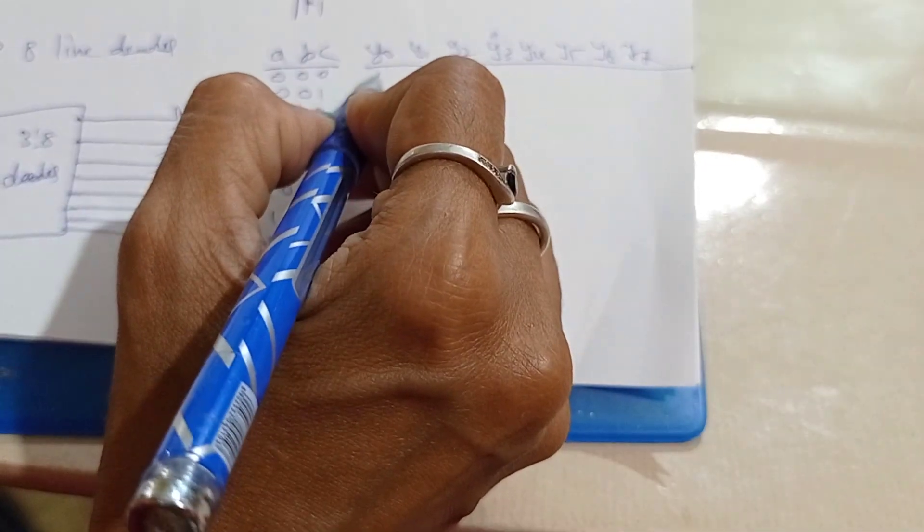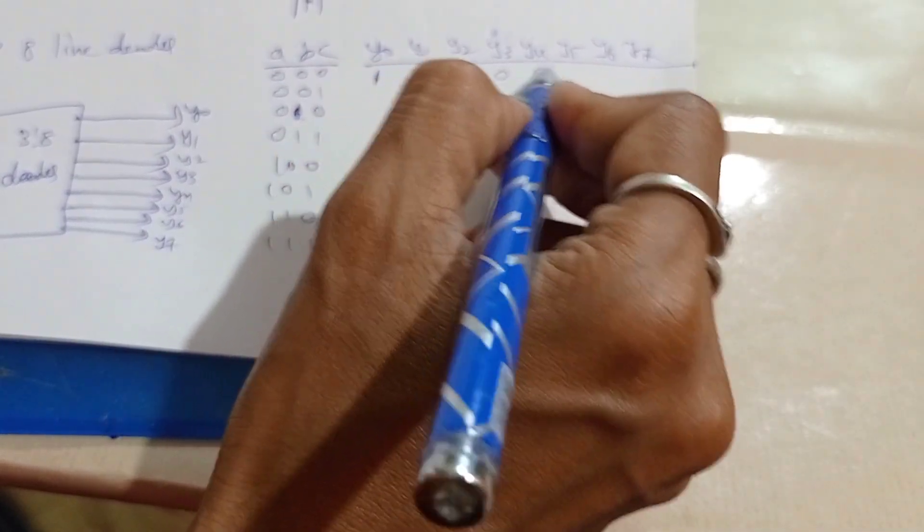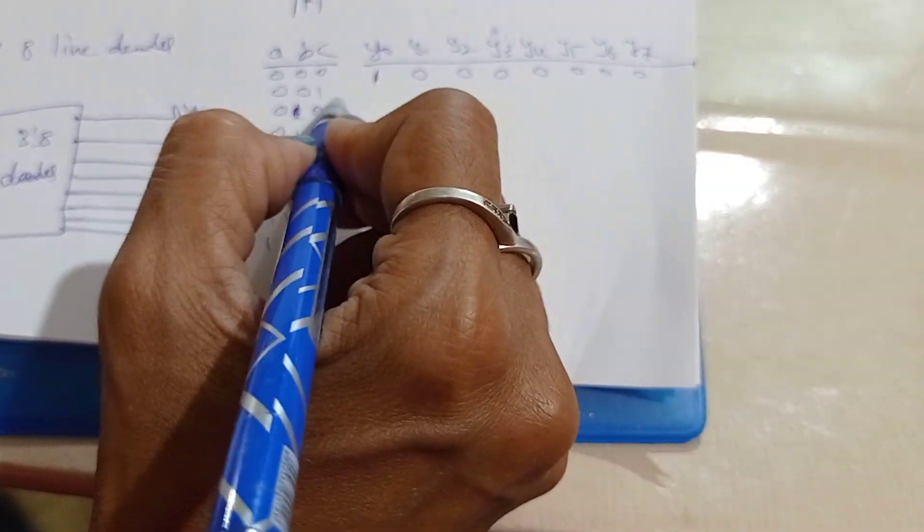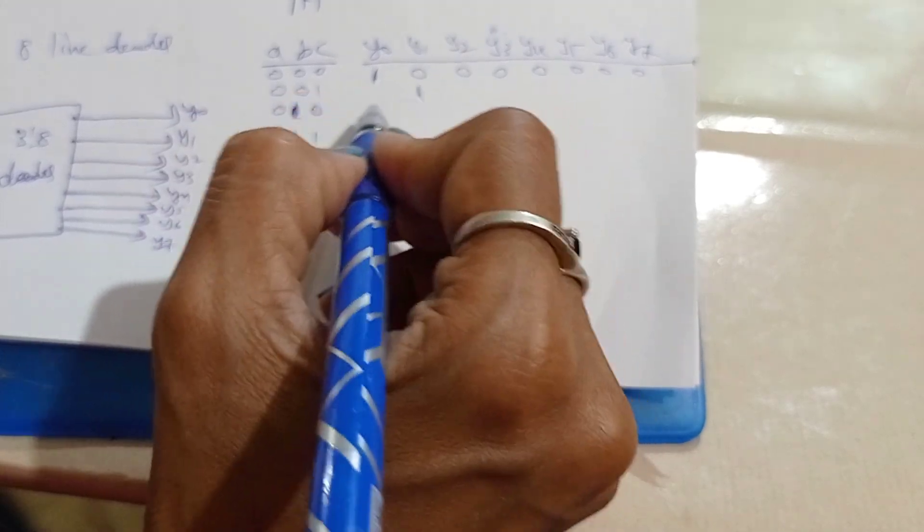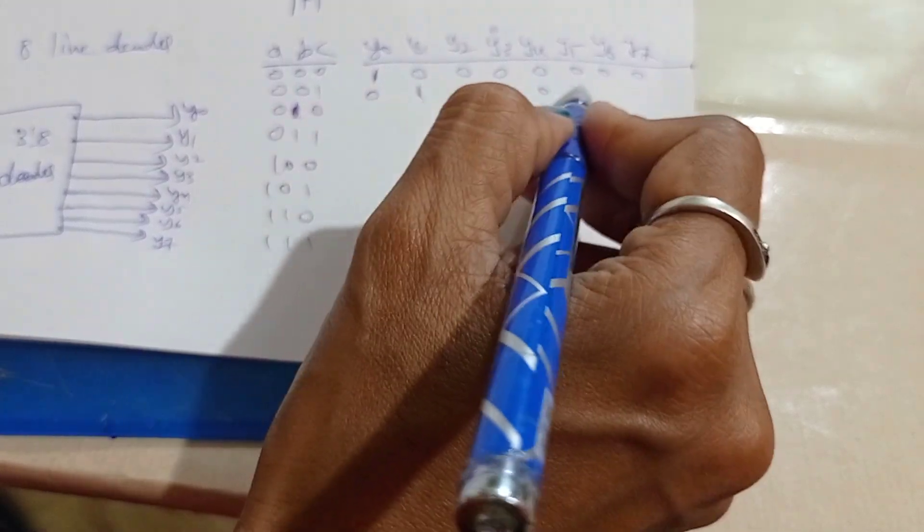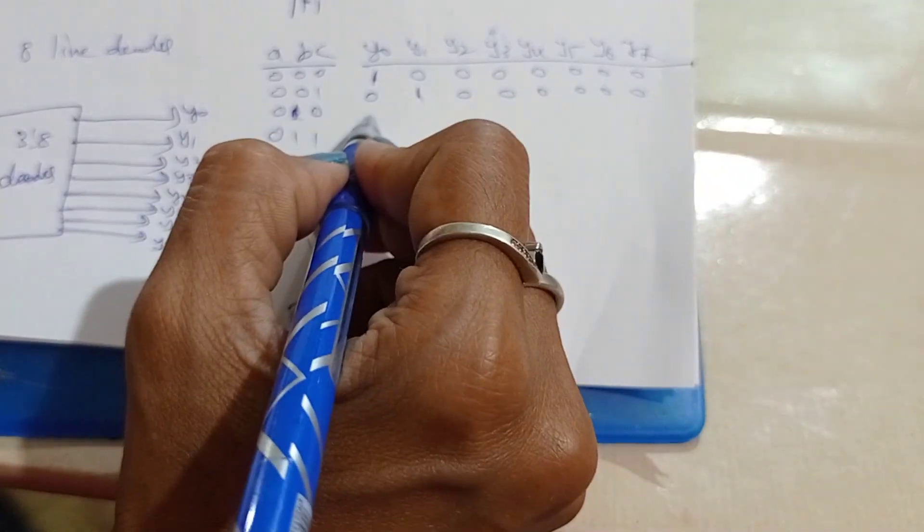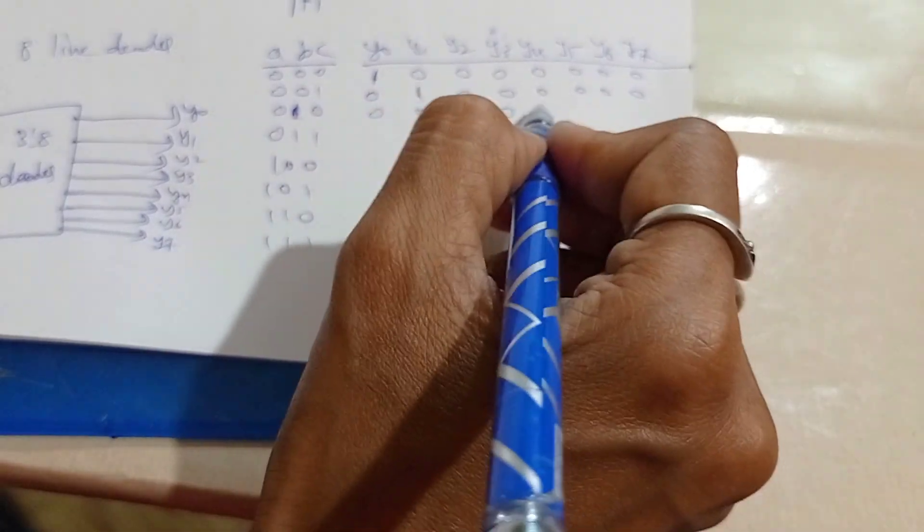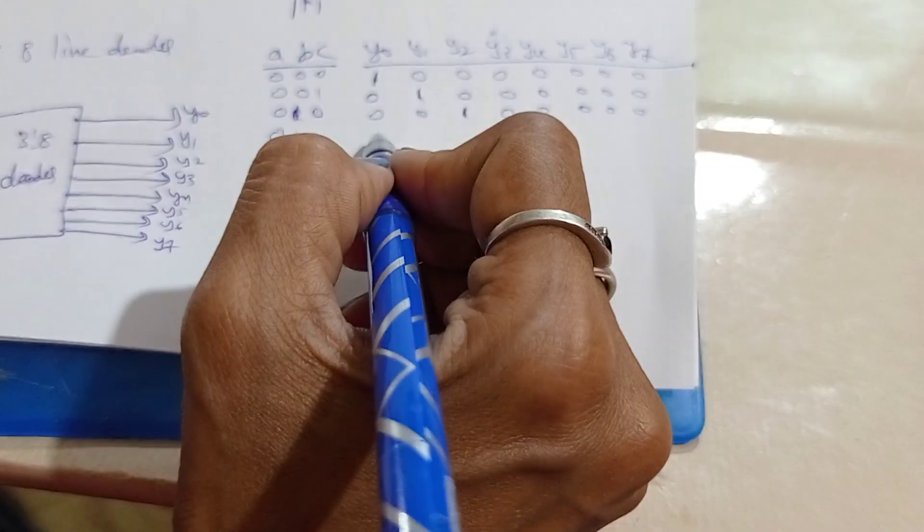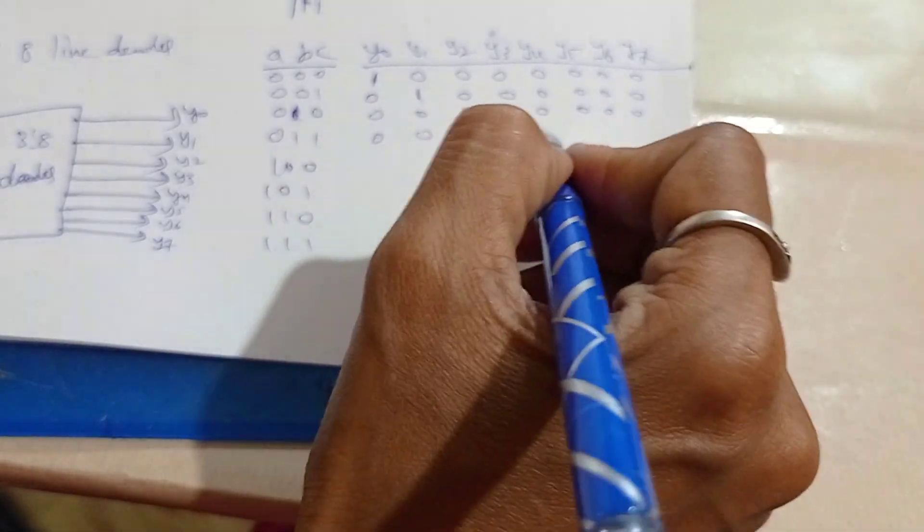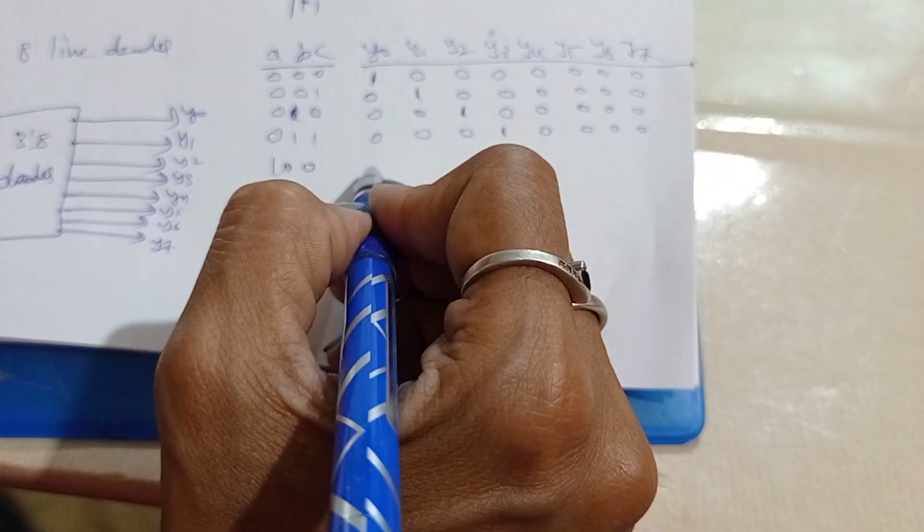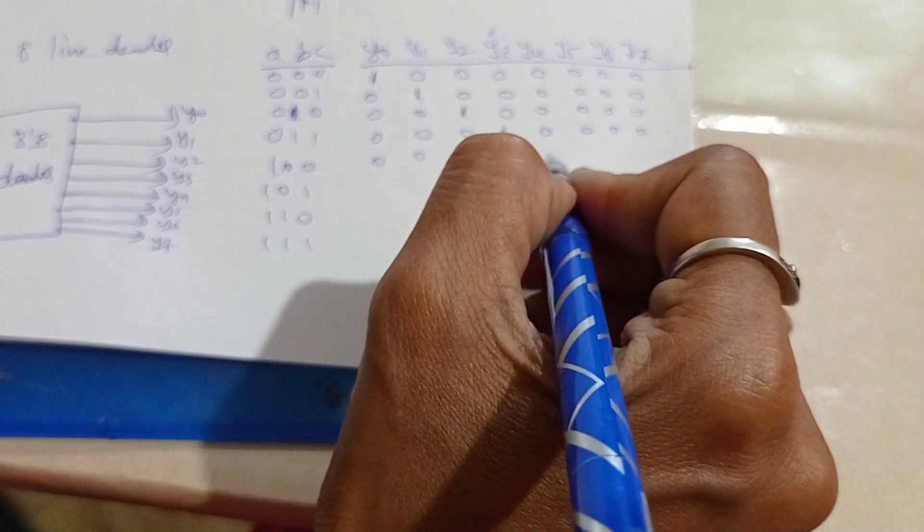For zero, Y0 becomes one and remaining all other values are zero. Next, for one, Y1 is one and remaining all zeros. For two, Y2 is one and remaining all zeros. For three, Y3 is one and all zeros.